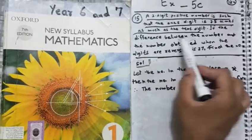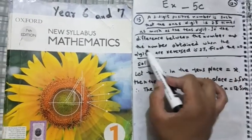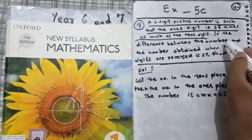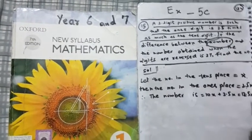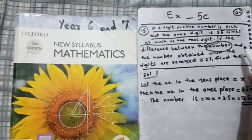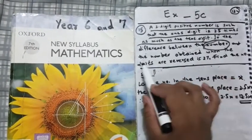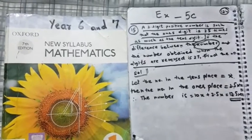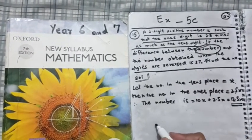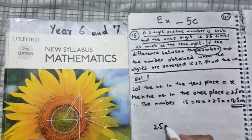If the difference between the number and the number obtained when the digits are reversed. This number, this 12.5 is what we're talking about. Next part: and the number obtained when the digits are reversed. Reversing the digits means that what was in the ones place, 2.5, goes to the tens place.